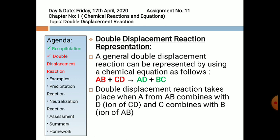The representation of a general double displacement reaction can be shown using a chemical equation: reactant AB reacts with another reactant CD, and the products become AD plus BC. This takes place when A from AB combines with D, the ion of CD, and C combines with B, the ion of AB. So when D combines with A it produces AD, and when the B ion combines with C it produces BC. Here, mutual exchange of D and B takes place.